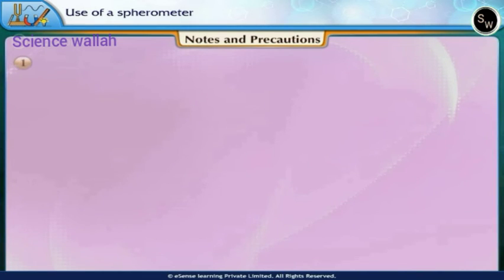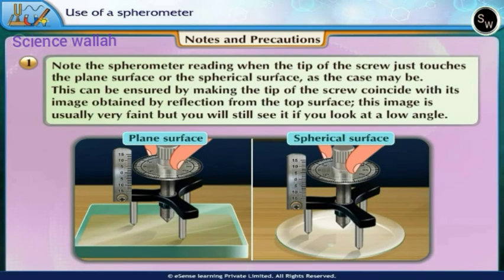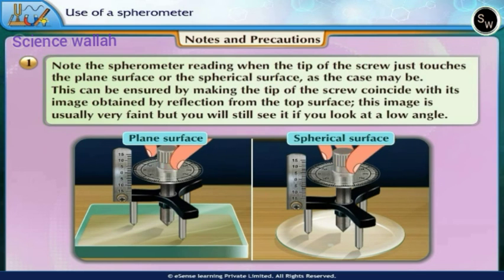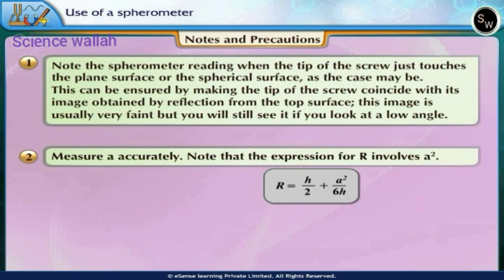Notes and Precautions: 1. Note the spherometer reading when the tip of the screw just touches the plain surface or the spherical surface as the case may be. This can be ensured by making the tip of the screw coincide with its image obtained by reflection from the top surface. This image is usually very faint but you will still see it if you look at a low angle. 2. Measure A accurately. Note that the expression for R involves A².